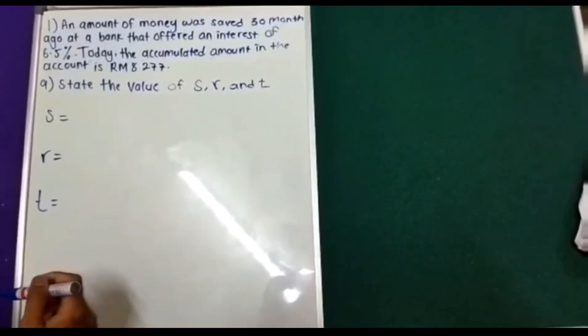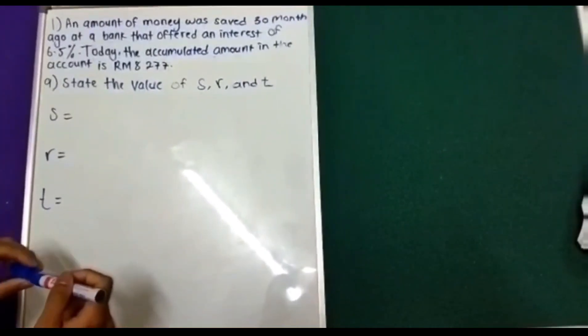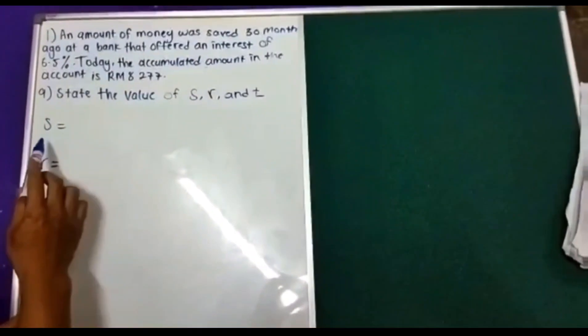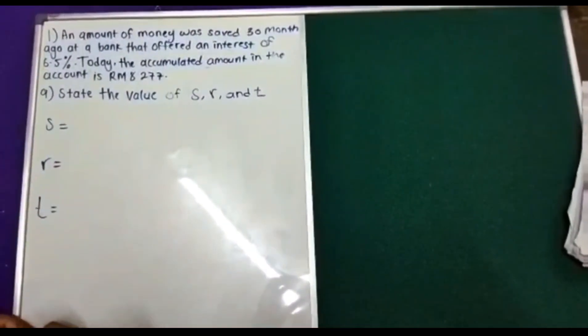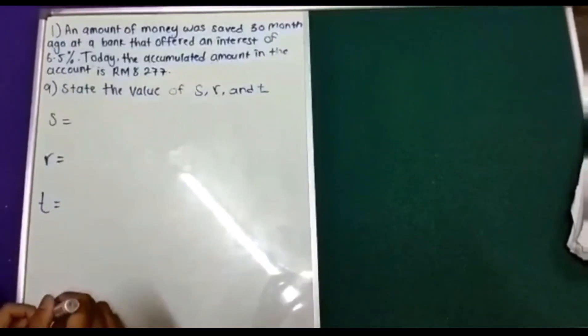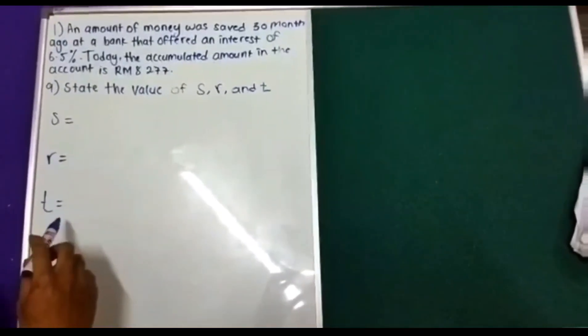For question A, state the value of S, R, and T. For S, S is future amount. For R, R is simple interest rate. T is term in years.